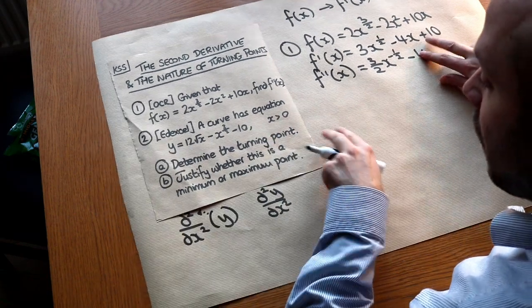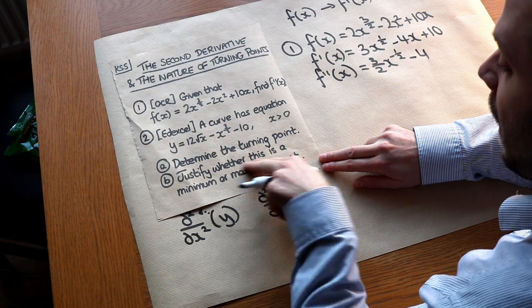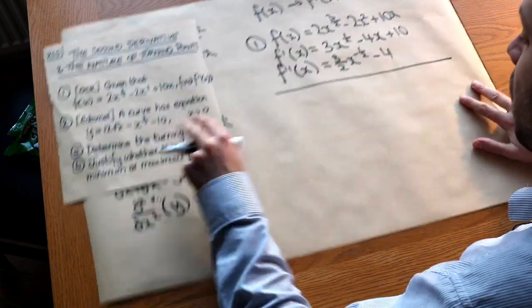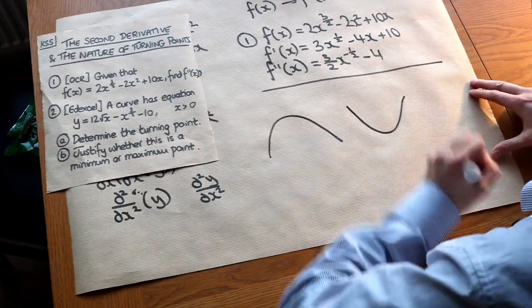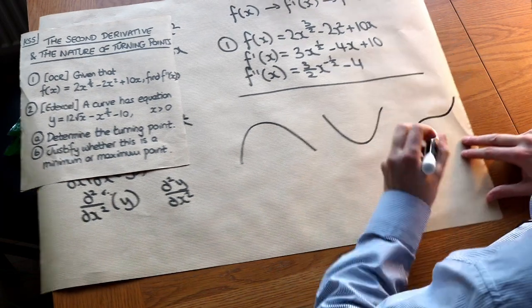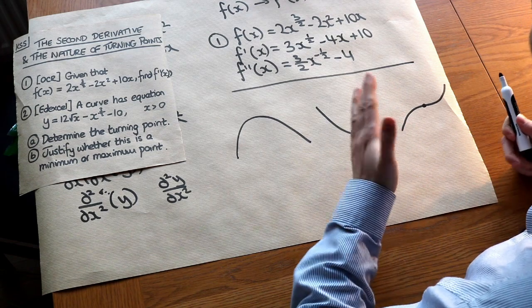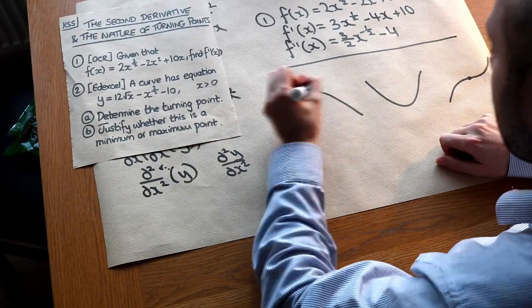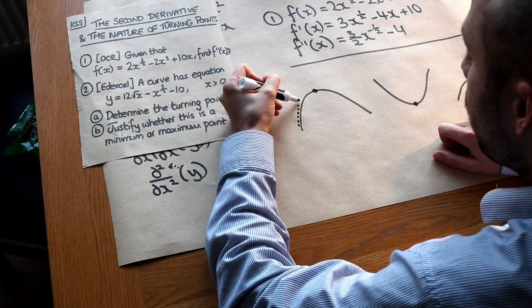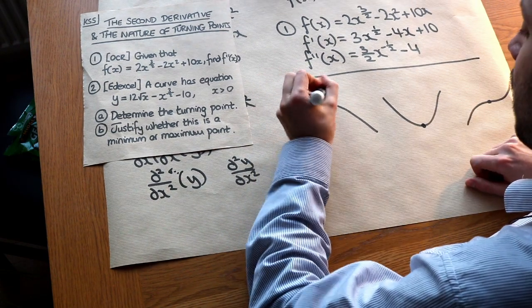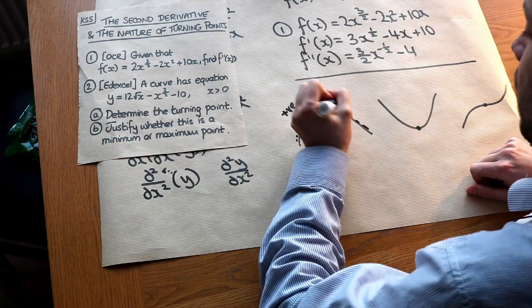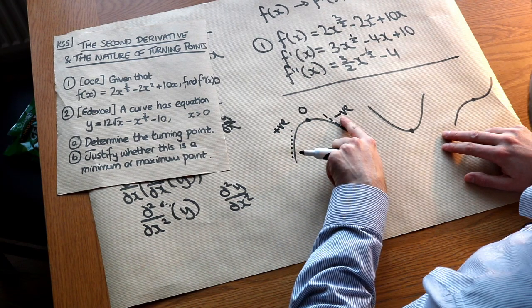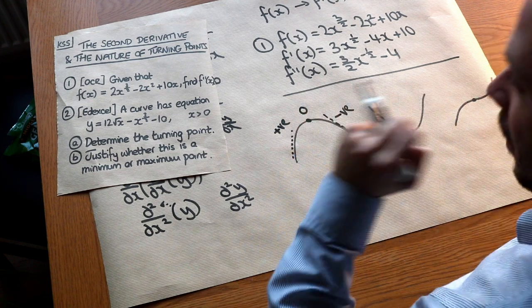For this second question, it wants us to find the turning point and justify whether it is a minimum or maximum. How can we use the second derivative, d²y/dx², to decide? Let's look at a maximum point: before it, the gradient is positive; at the turning point, the gradient is zero; just after, the gradient is negative. So the gradient is gradually decreasing — going from positive to negative — meaning the gradient of the gradient is negative. So d²y/dx² is negative at a maximum.